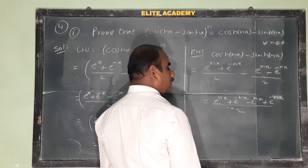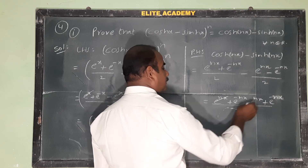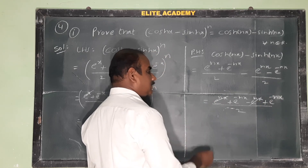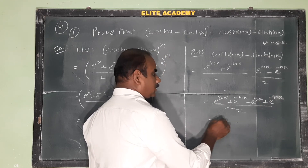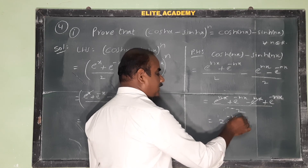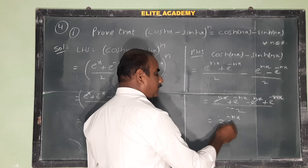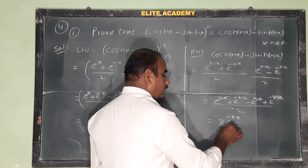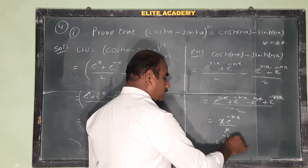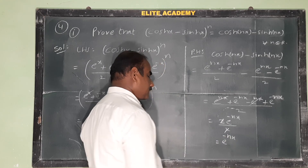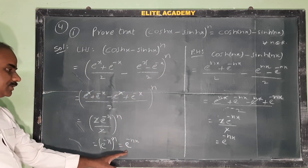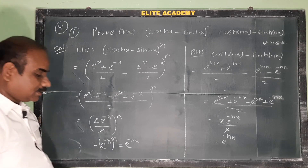So e^(nx) and minus e^(nx) cancel, and we are left with e^(-nx) plus e^(-nx), giving 2e^(-nx) / 2, which equals e^(-nx). Therefore LHS is equal to RHS.